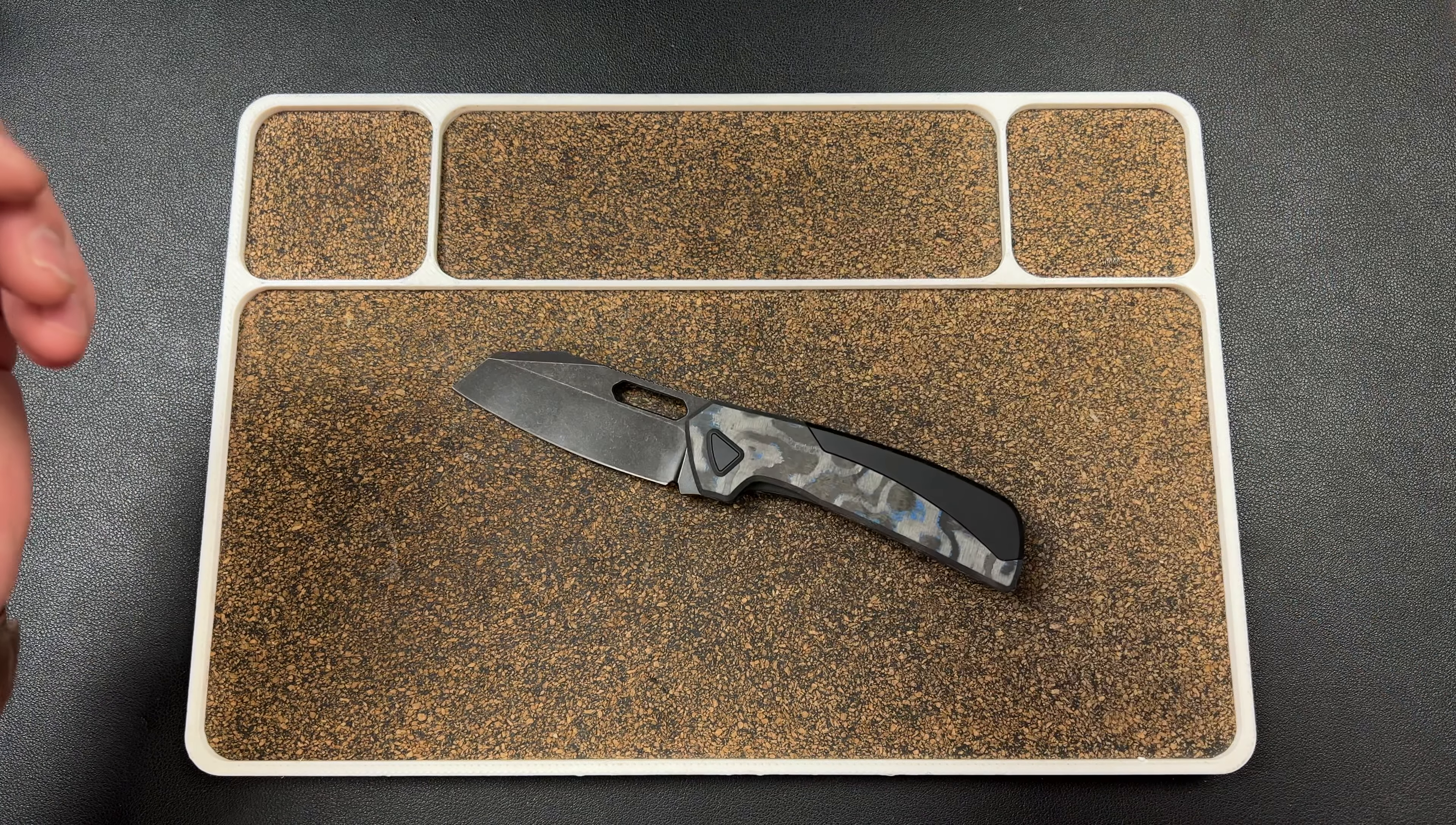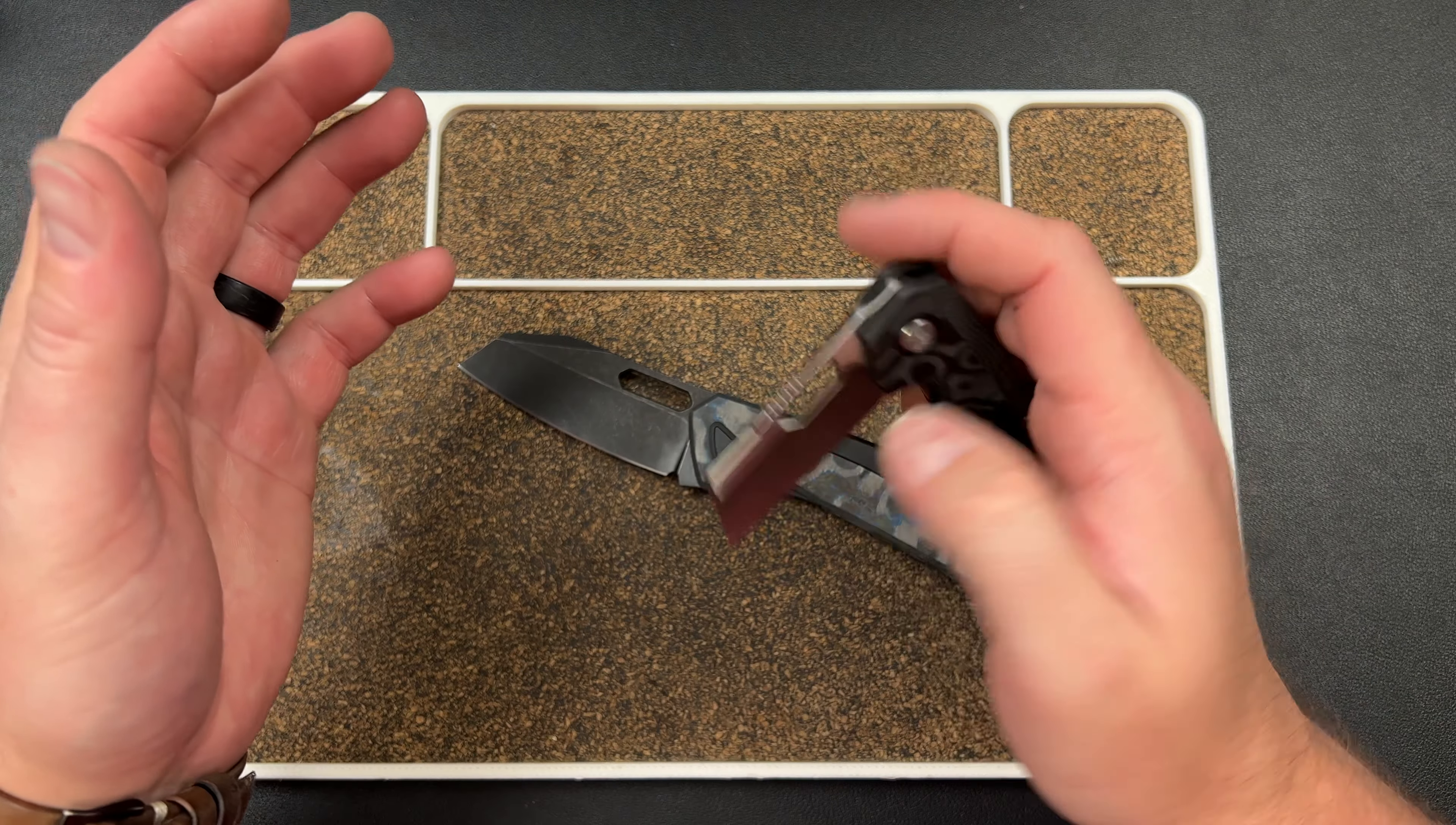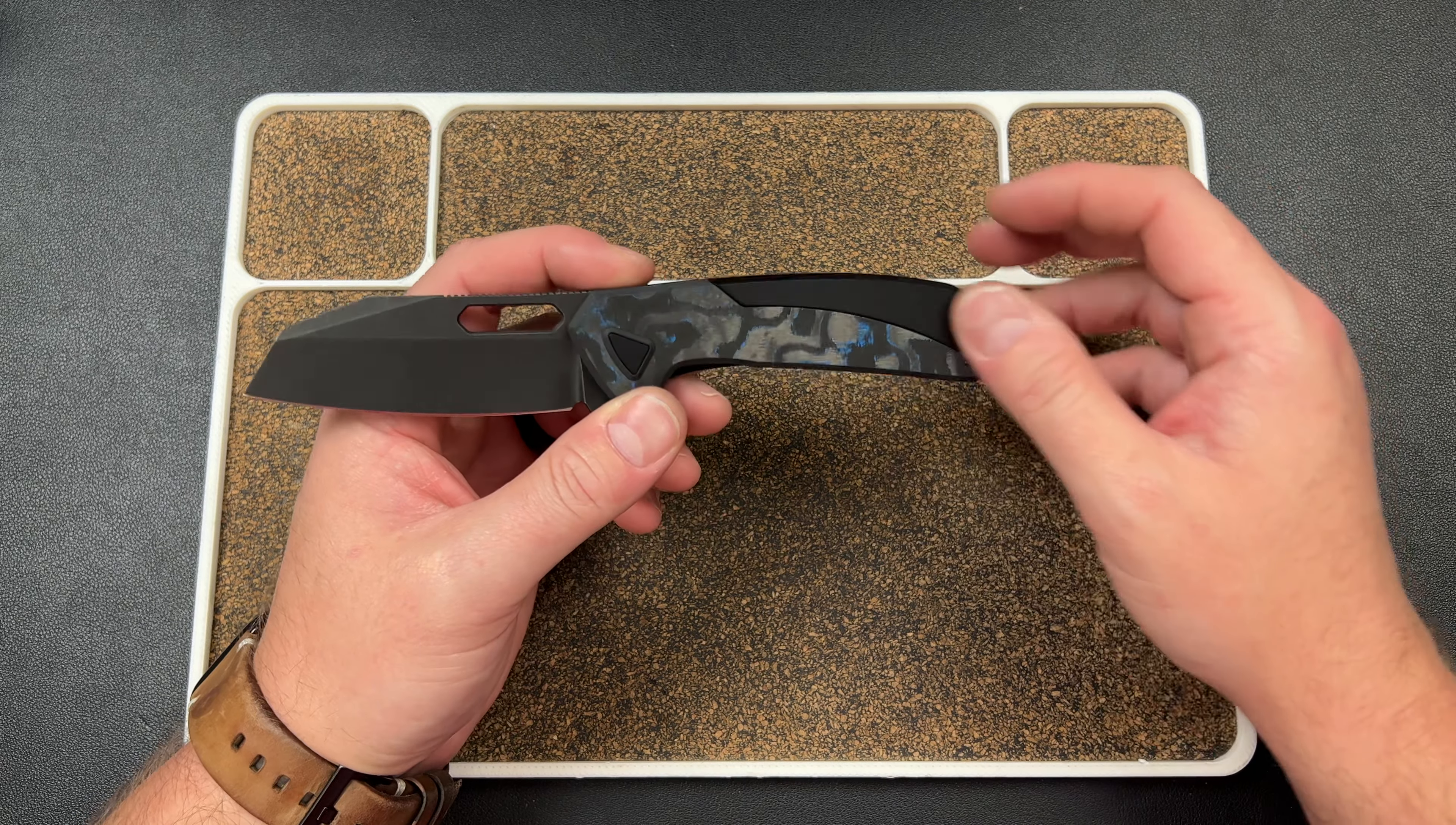We did the Nip prototypes in titanium and then we did carbon fiber on production run. We knew the model was working, but even that's a risk. It wasn't a pre-order so we felt comfortable with it.